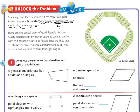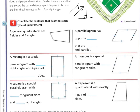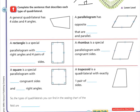So just a quick reminder: parallel lines will never ever cross, while perpendicular lines kind of meet at a T, forming a 90-degree angle. So let's look through the table so that we can get the five different types of quadrilaterals before we can answer our question.